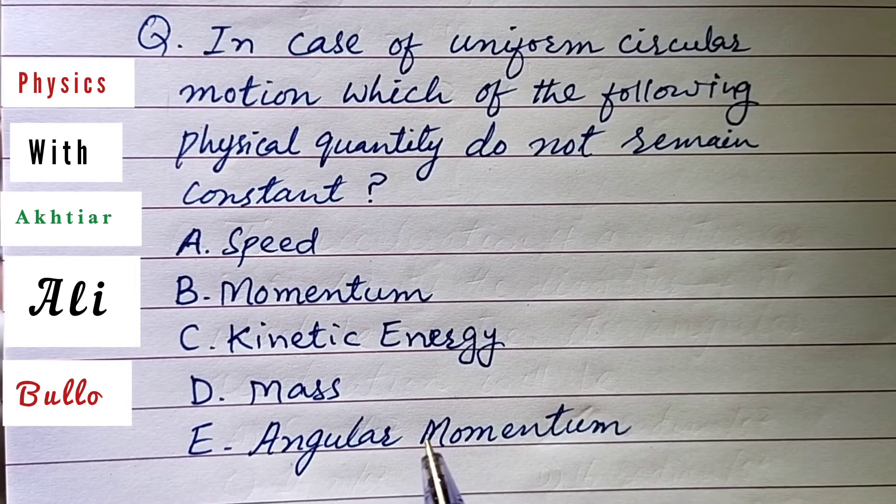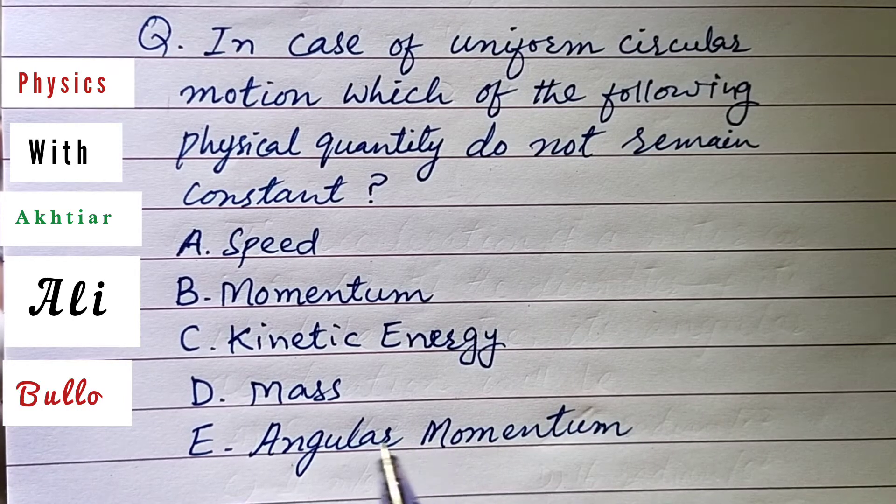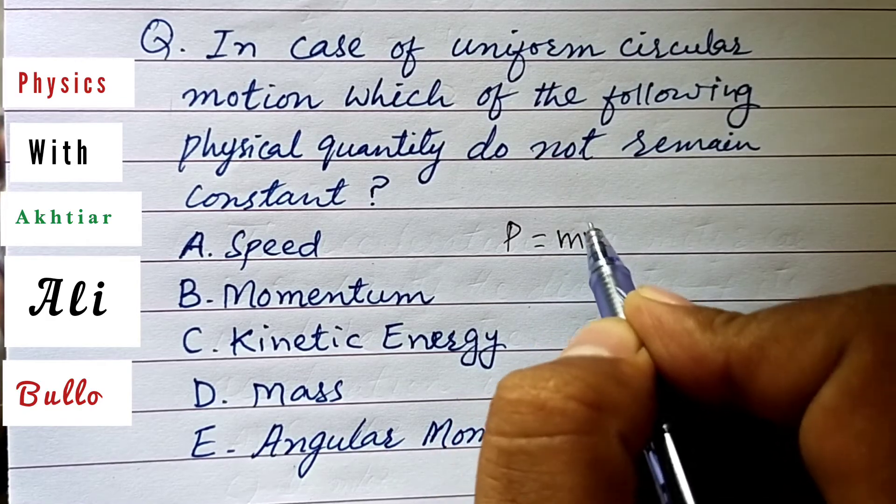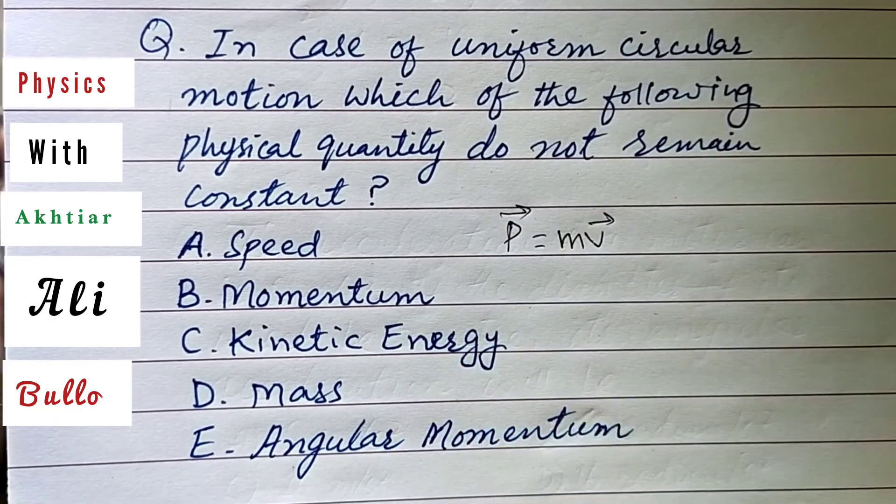also be constant in uniform circular motion. Linear momentum is the simple product of mass and velocity, so